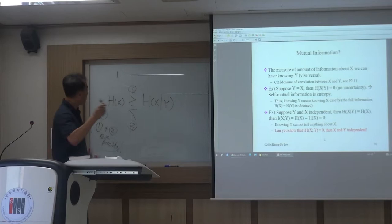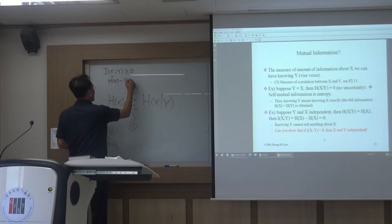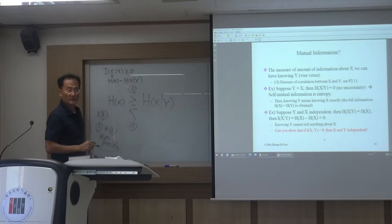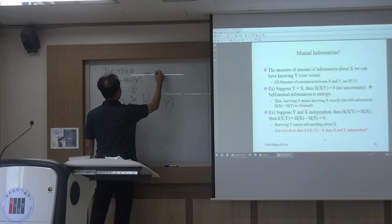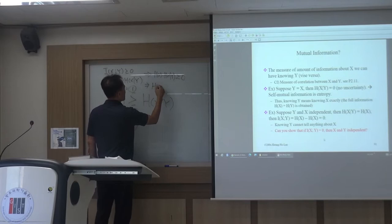Mutual information is non-negative — this is just by definition. Having said this, we can say that H(X) minus H(X|Y) is greater than or equal to 0, and from here we can say H(X|Y) ≤ H(X).